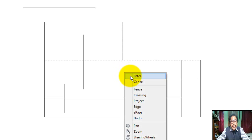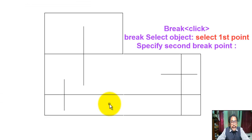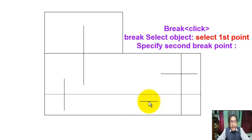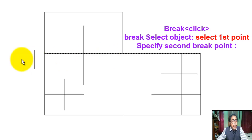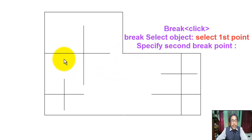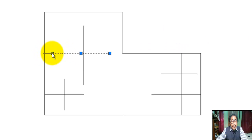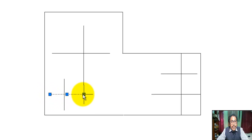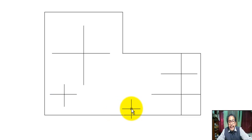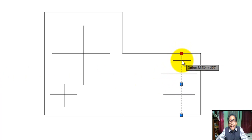Stretch this line — ortho on. Click on trim, select object, enter, select object to trim. Now break this portion — click on break command, specify first point, specify second point. Now break this line from this point to this point. Click on the stretch command and stretch this line.